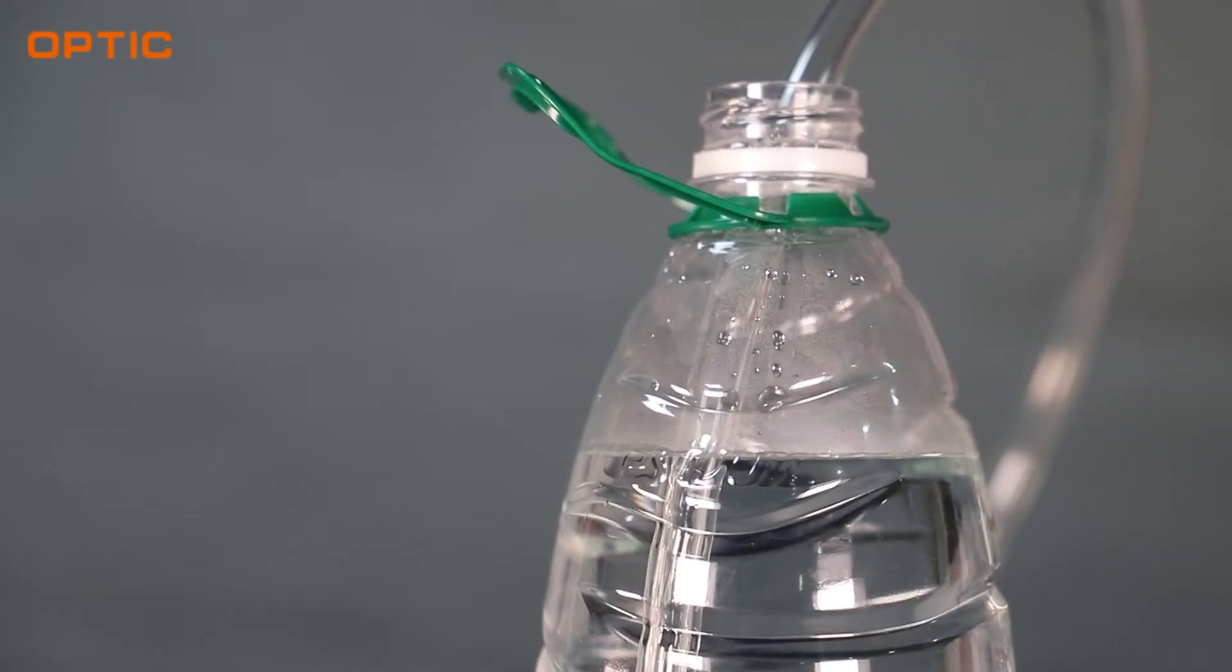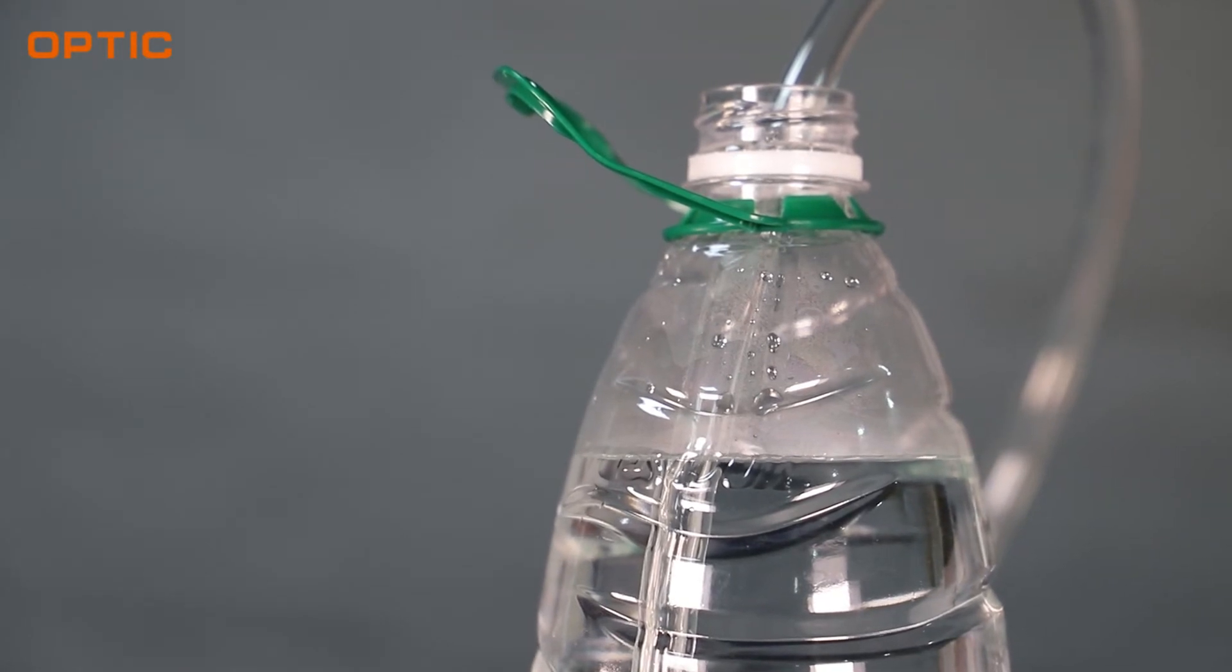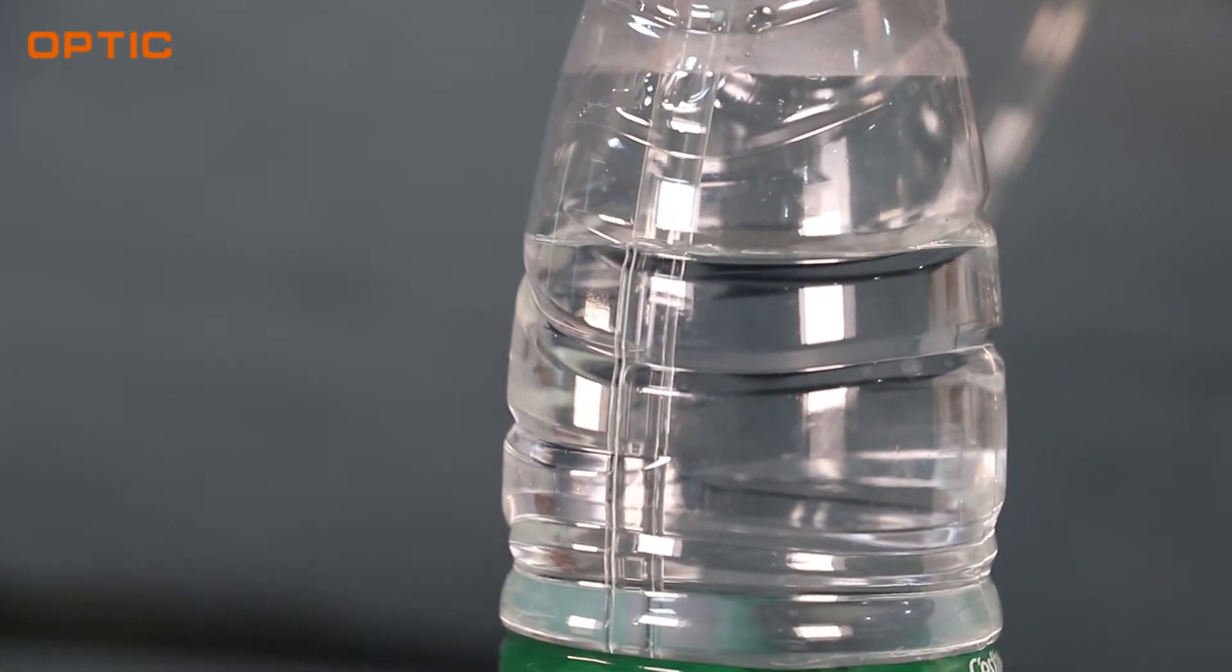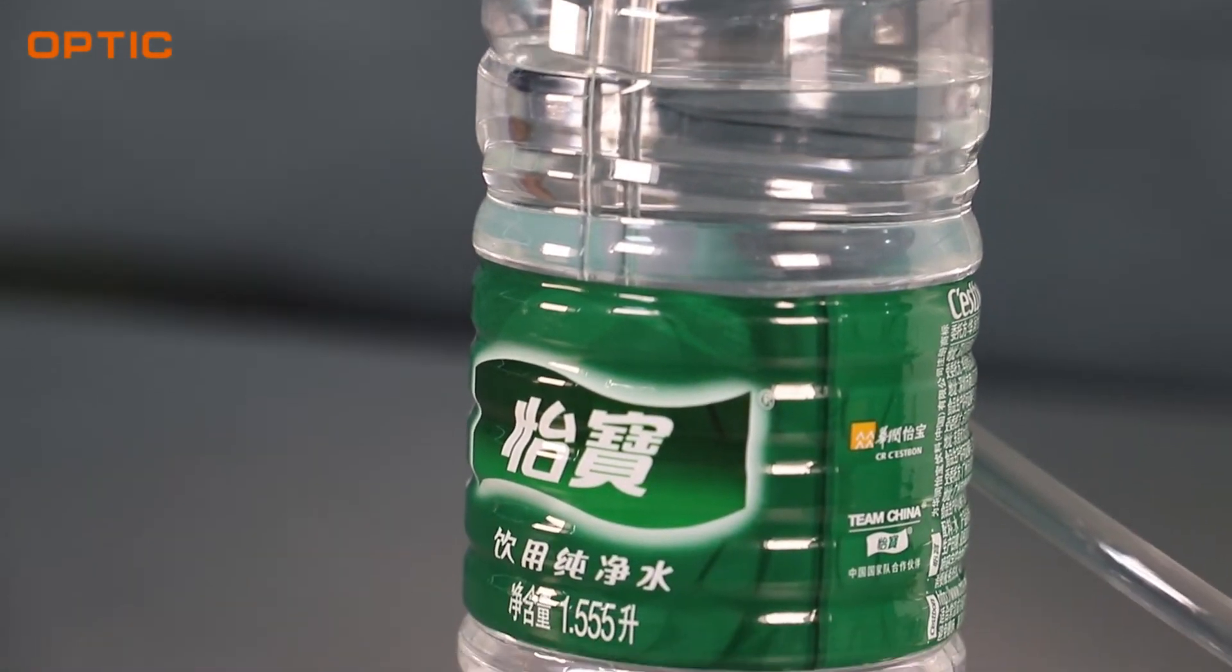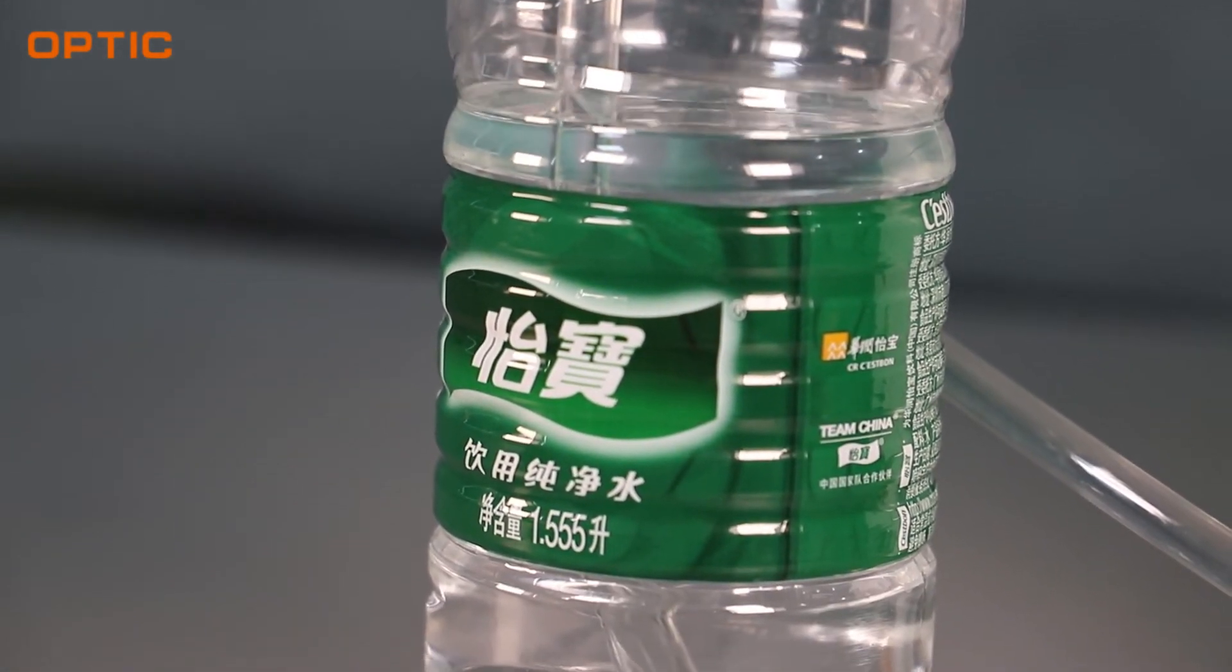Next step, connect the plastic water tube. One side connect the machine water in, another side connect water tank. The machine capacity 1.6 to 1.7 liters water.